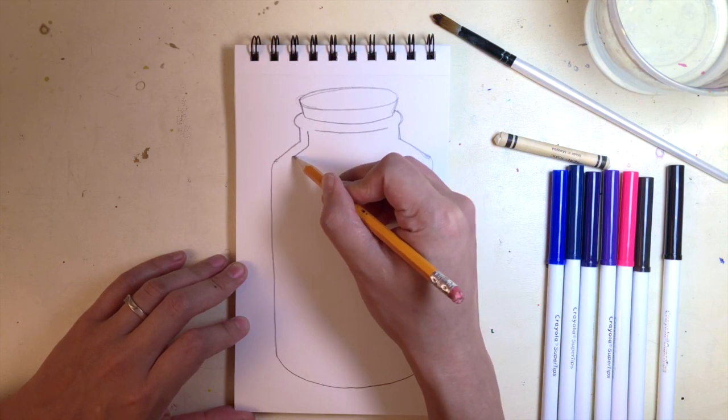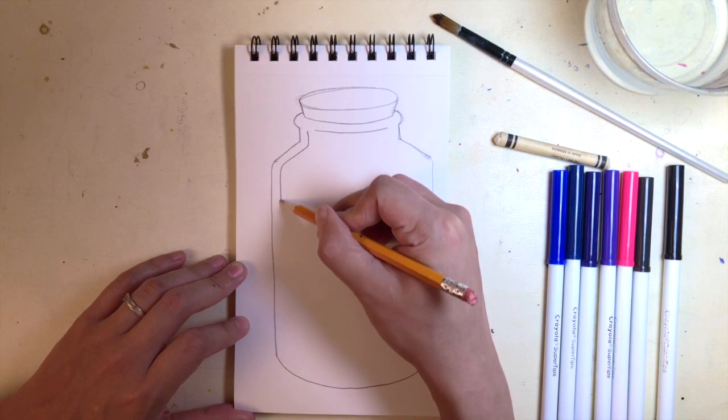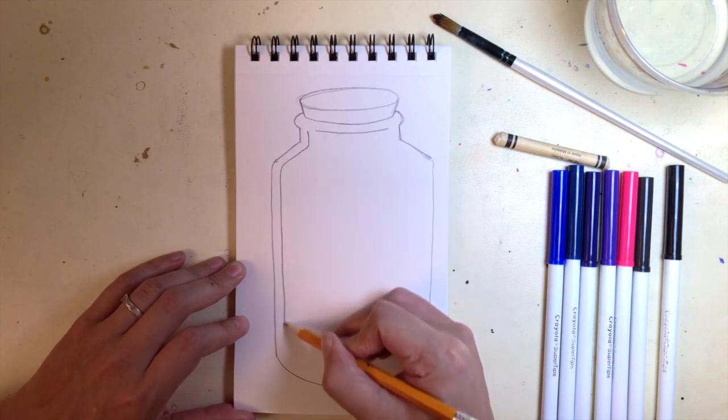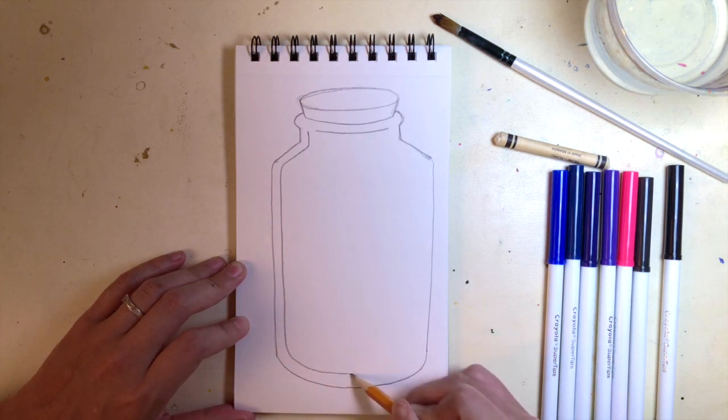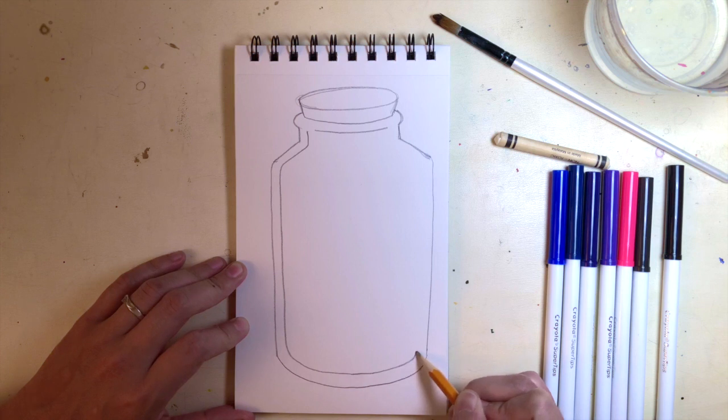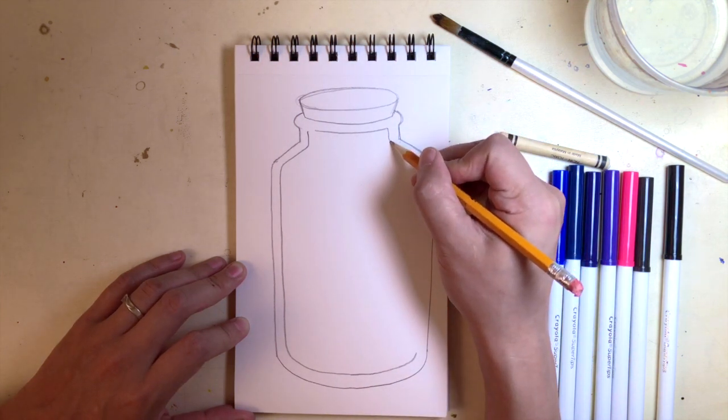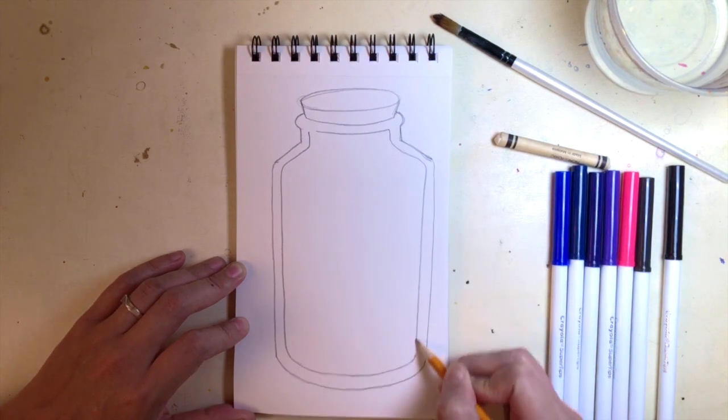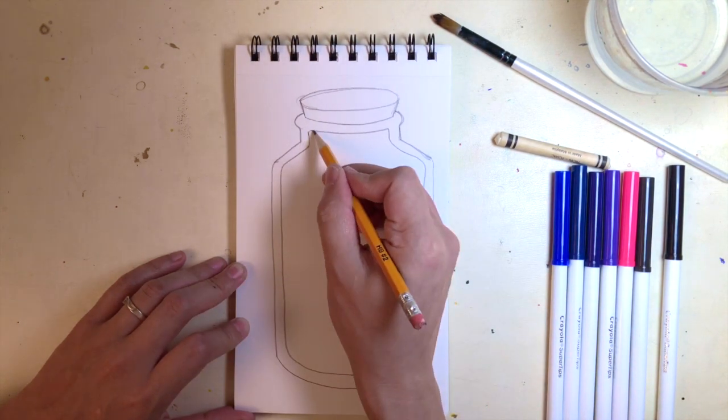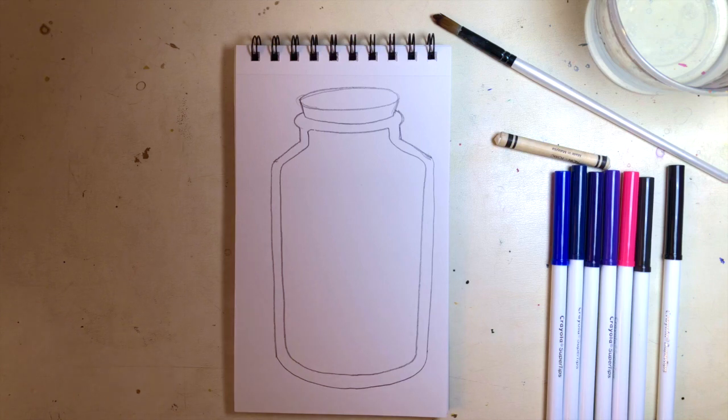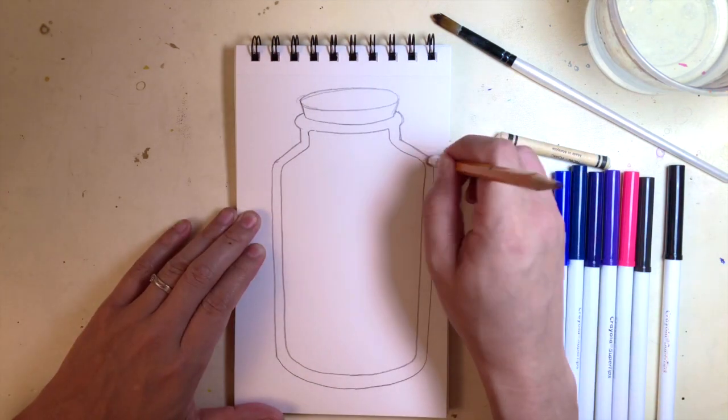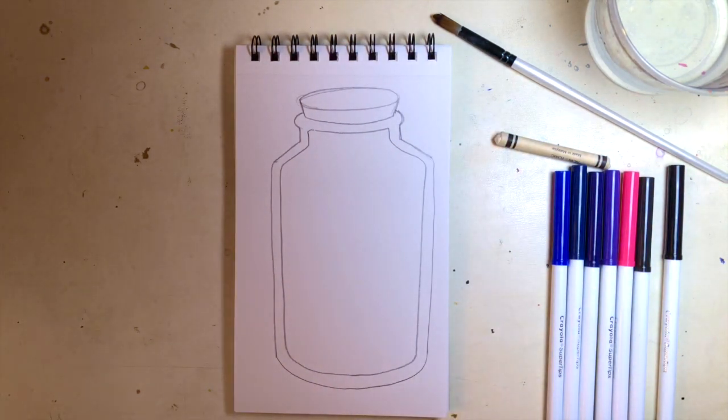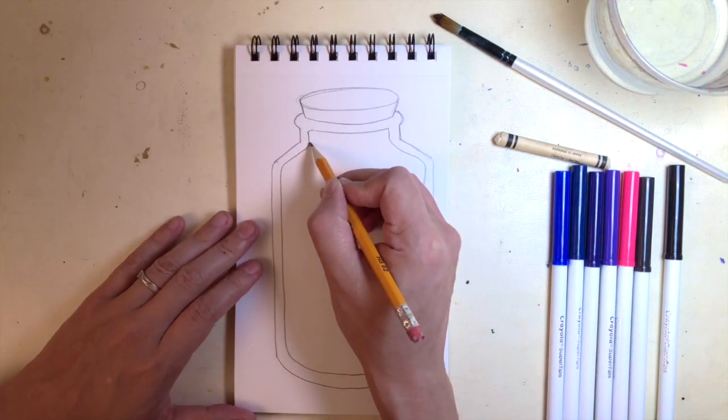I also want to draw the thickness of the jar. So I'll make a double line in the inside parts of the lines I did. And that's it, that's the jar. We're also going to make sure that the lines are clean and enclosed.